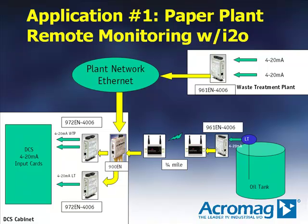The remote oil tank location includes a level transmitter output wired to another 961EN analog input module. This module is connected through an RF wireless modem going back to the DCS control cabinet. The RF modem and another 972EN are connected together and into the plant network through the 5 port ethernet switch model 900EN by Acromag.